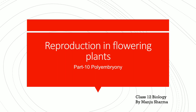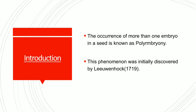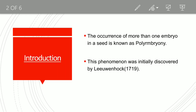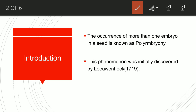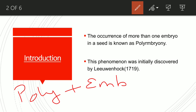What is polyembryony? The word polyembryony is made up of two words: poly and embryony. The word poly refers to two or more, and embryony means production of embryo.